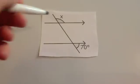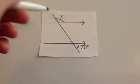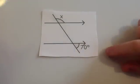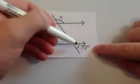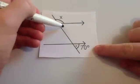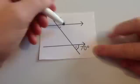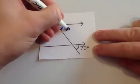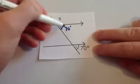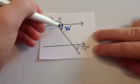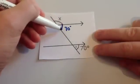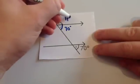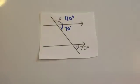This time we've been asked to calculate X. If you consider your corresponding angles — your F angles — this angle would be the same as this angle, so this is 70 degrees. Because these form a straight line with each other, if this is 70 degrees, this angle here would be 110 degrees. So X is 110.